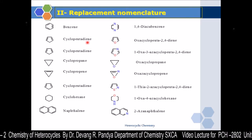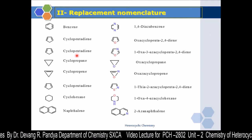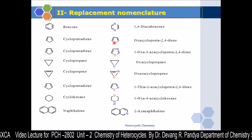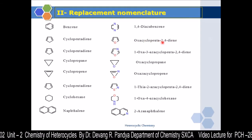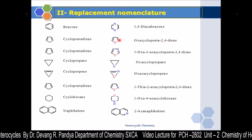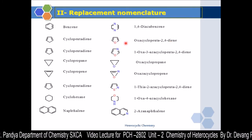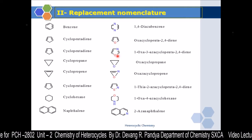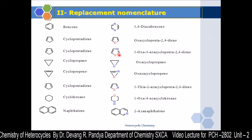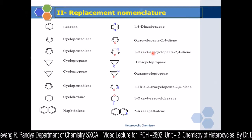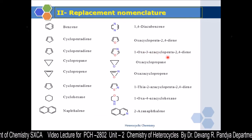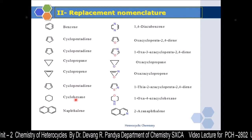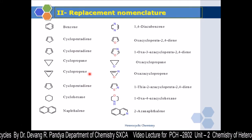For cyclopentadiene examples: with a single oxygen heteroatom, you get oxacyclopenta-2,4-diene, where the double bonds are at positions two and four. With oxygen and nitrogen together — oxygen given priority at position one and nitrogen at position three — you get 1-oxa-3-azacyclopenta-2,4-diene. That way you can give replacement nomenclature to heterocyclic compounds with various heteroatoms.